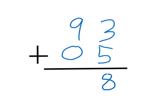3 plus 5 is 8. I move to the next leftmost column which is the tens column and I add 9 plus 0 which is 9.